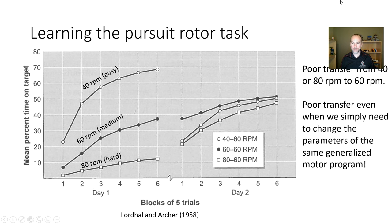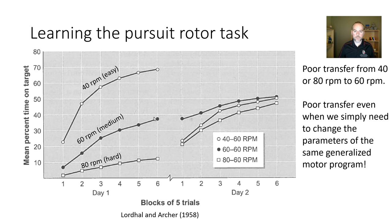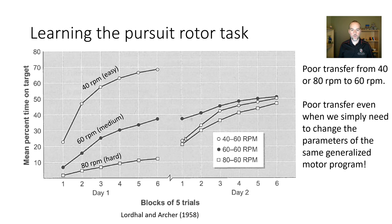Specifically, the 40 RPM group transfers to 60 and their performance drops, falling below the control group who practiced 60. The 80 RPM group improves when switched to 60 but still doesn't outperform the 60-to-60 group. This is surprisingly poor transfer even though the only change is a parameter — the speed — while the invariant features of the generalized motor program remain the same. Despite this, both 40 and 80 RPM groups do show positive transfer — they're above baseline — but it's less efficient than practicing 60 directly.